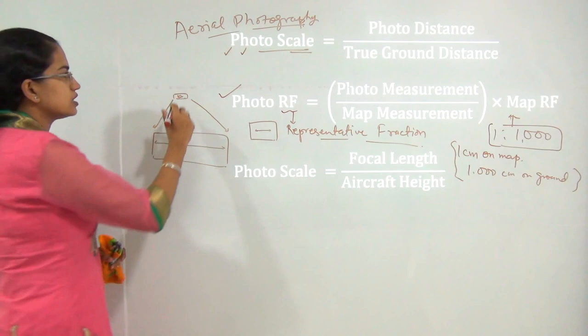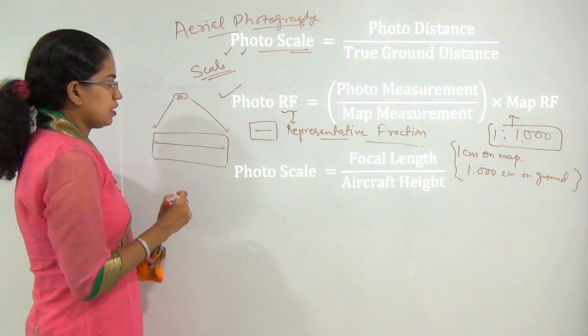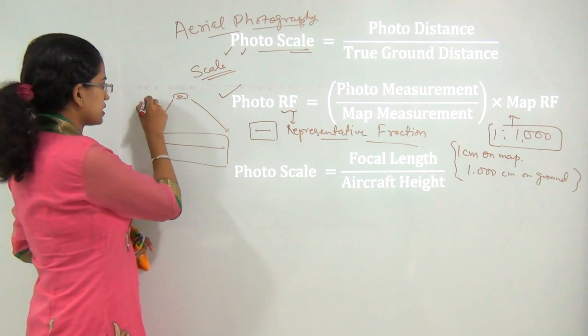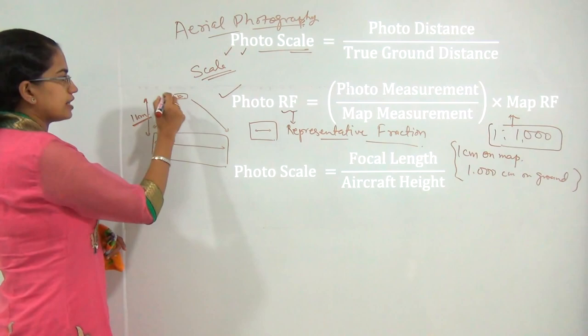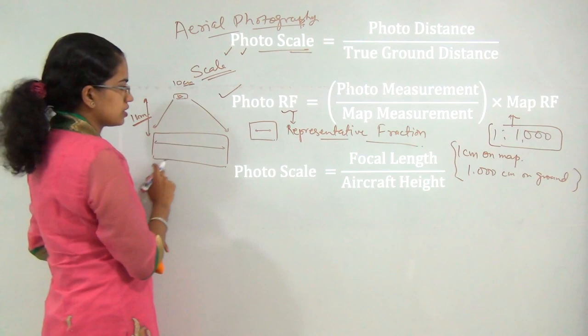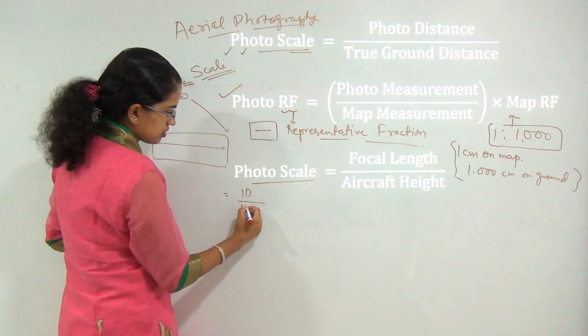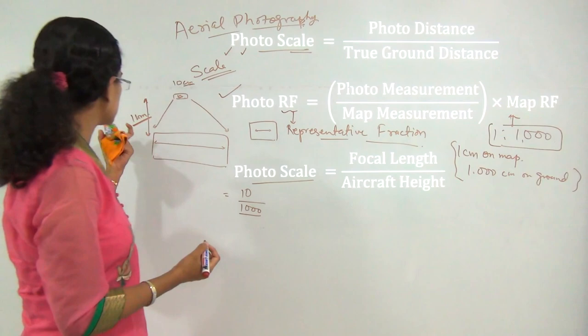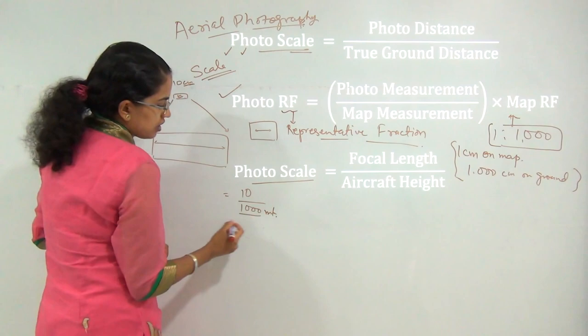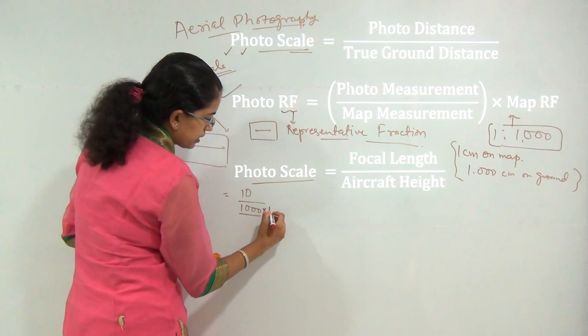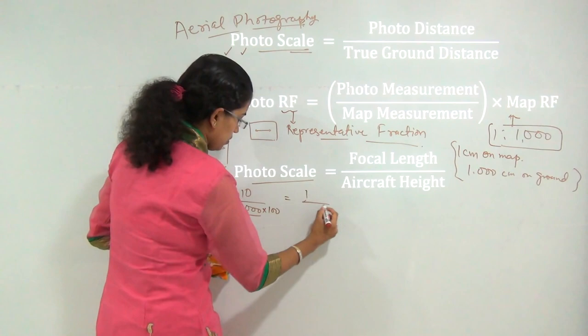If you have the focal length and the height of the aircraft, you can calculate the photo scale. For example, if the aircraft is flying at a height of 1 kilometer and the focal length is 10 centimeters, the photo scale equals focal length divided by the flying height. Converting 1 kilometer to centimeters gives 100,000 cm, so the photo scale would be 1/10,000.